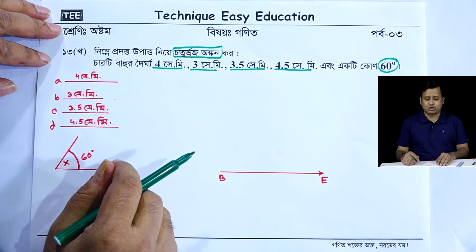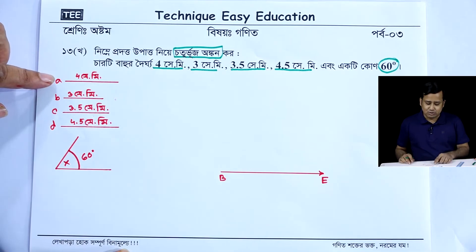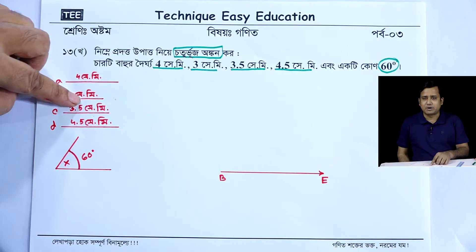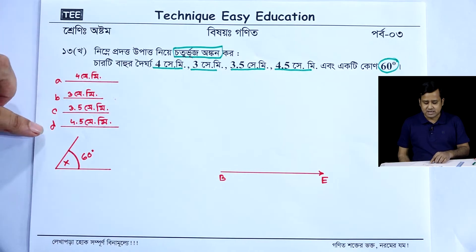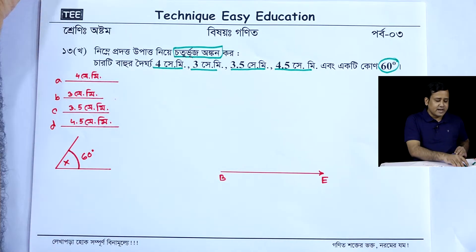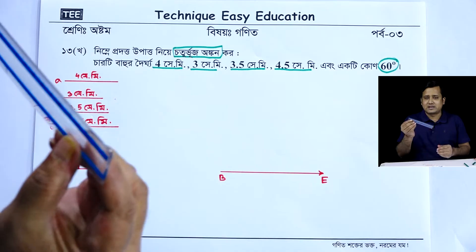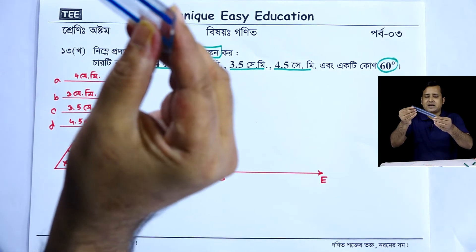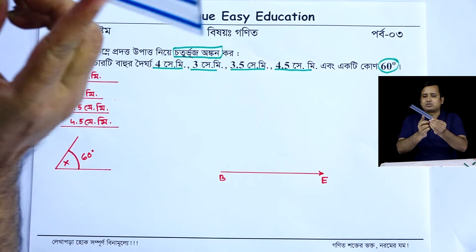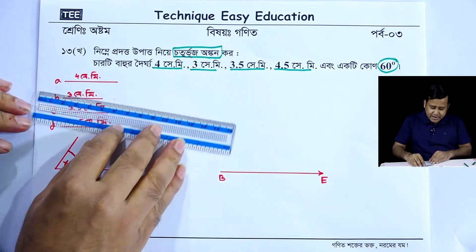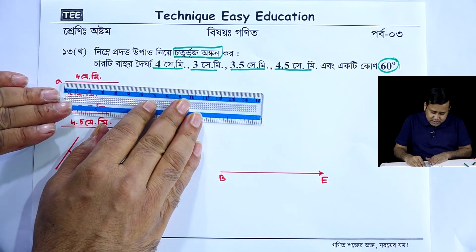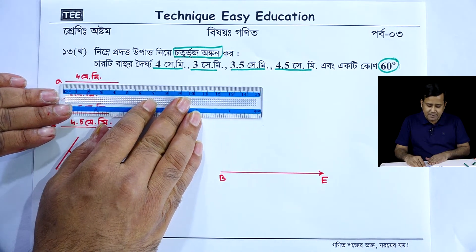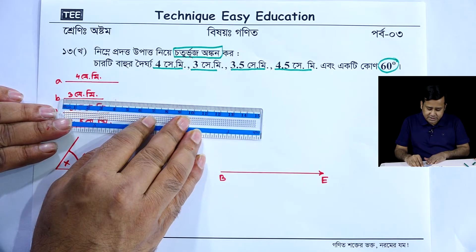This is 4 cm, 2 is 3 cm, 3.5 cm, 2 is 4.5 cm. This is 4 cm, 1 is 1 cm, and 1 is 1 cm. This is 4 cm, and this is 4 cm. This is 3 cm.